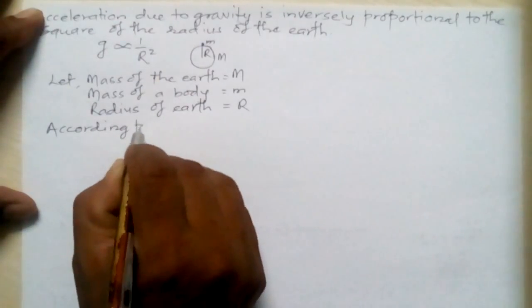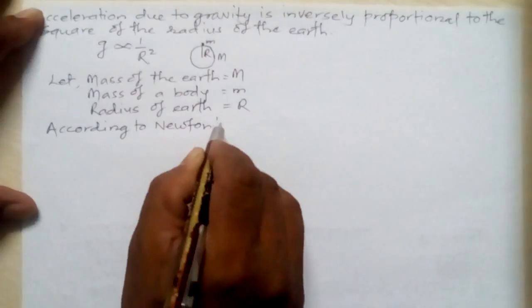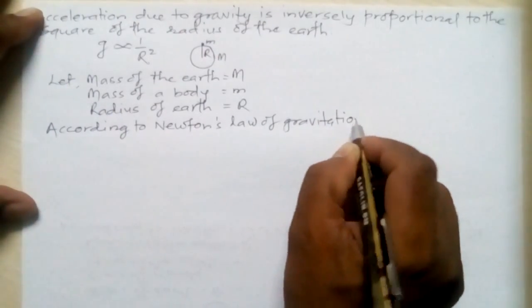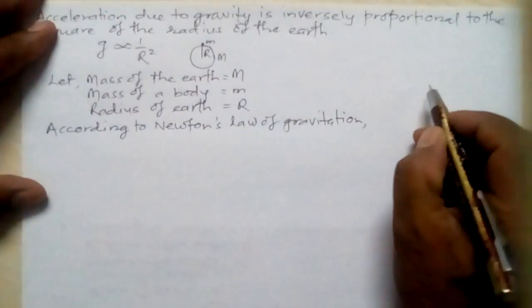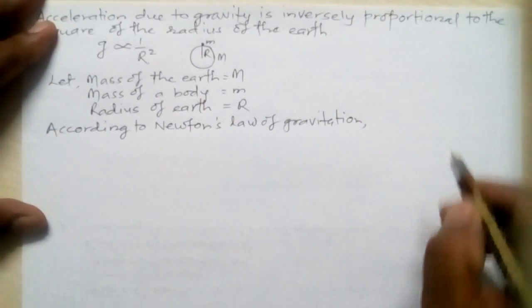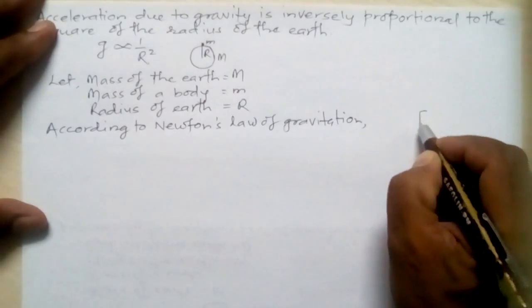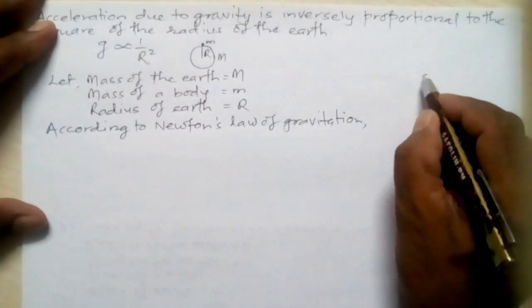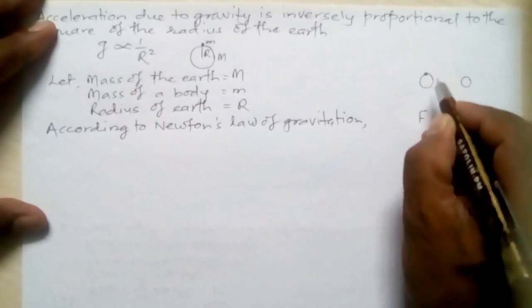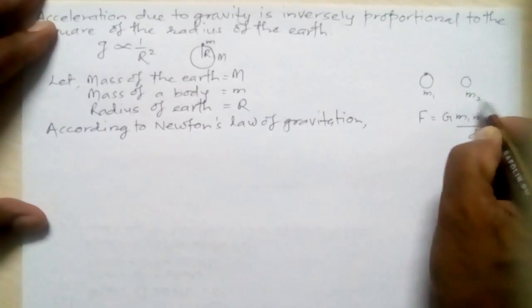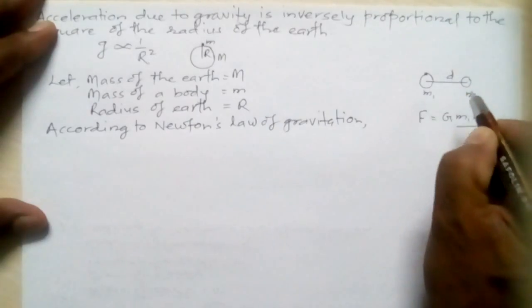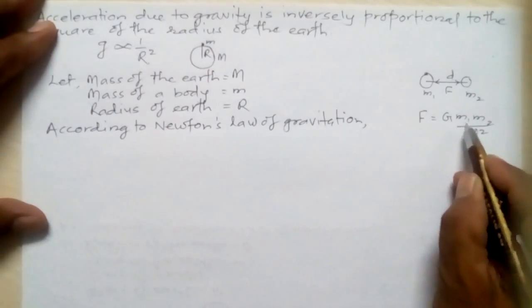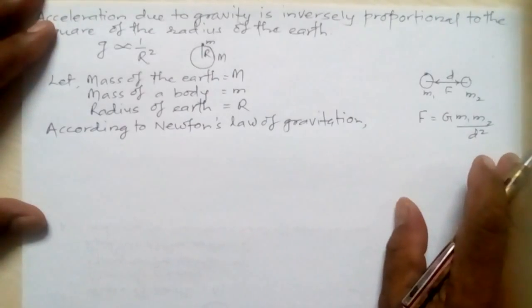According to Newton's law of gravitation — I want to recall what we did when learning about Newton's law of gravitation. We proved an equation F = G·m1·m2 / d². It was derived such that two masses m1 and m2, separated by a distance d, have a gravitational force F = G·m1·m2 / d².